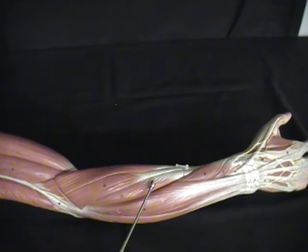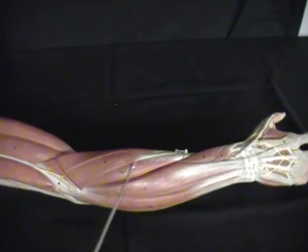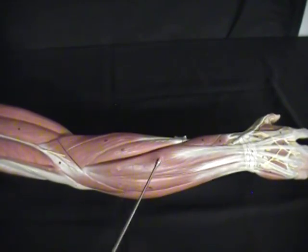Next to and actually running behind it is another one. Since we had extensor carpi radialis brevis, this one that has to travel further or has a longer tendon, we're going to call that the extensor carpi radialis longus.